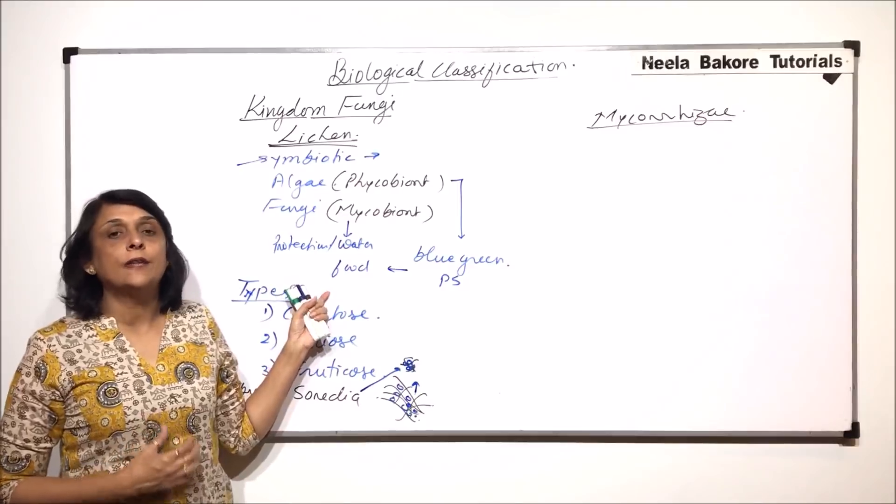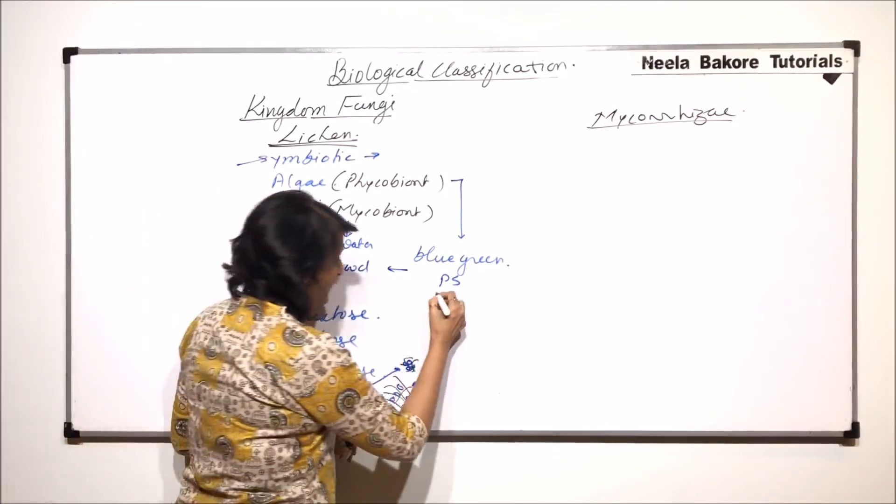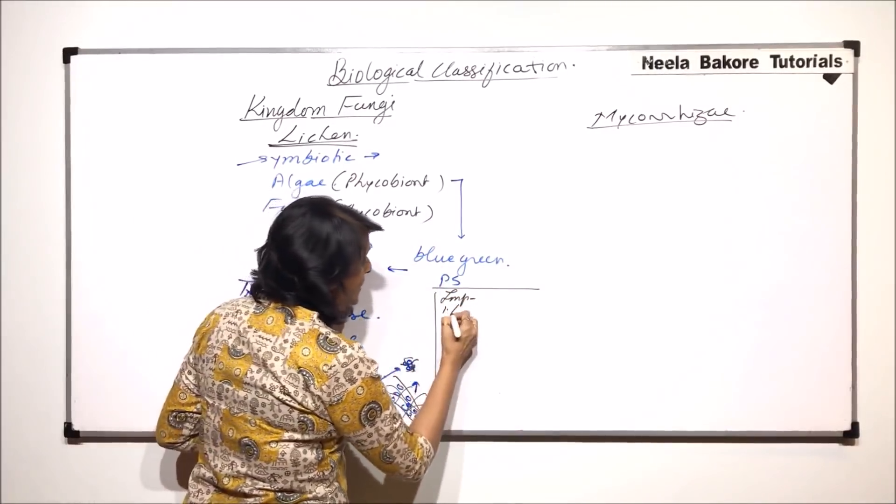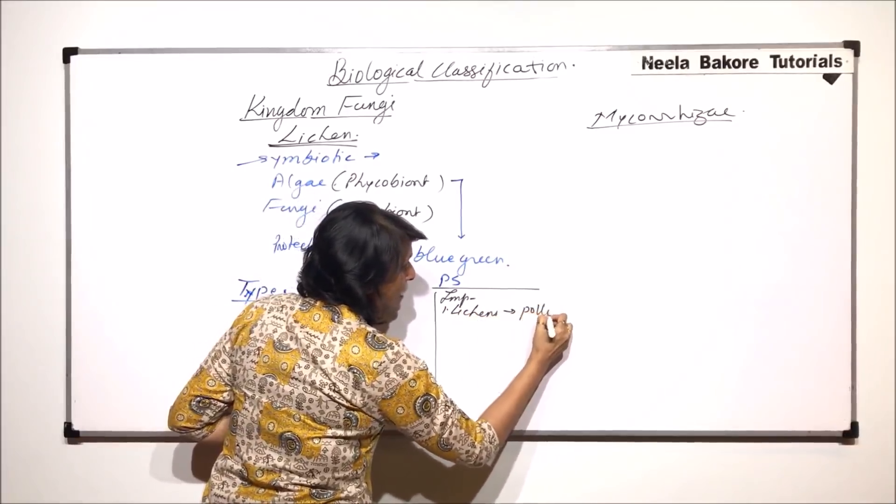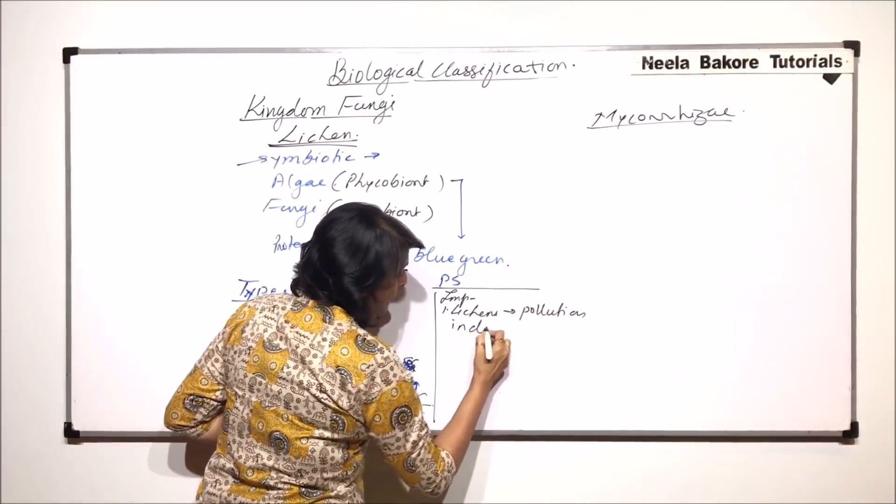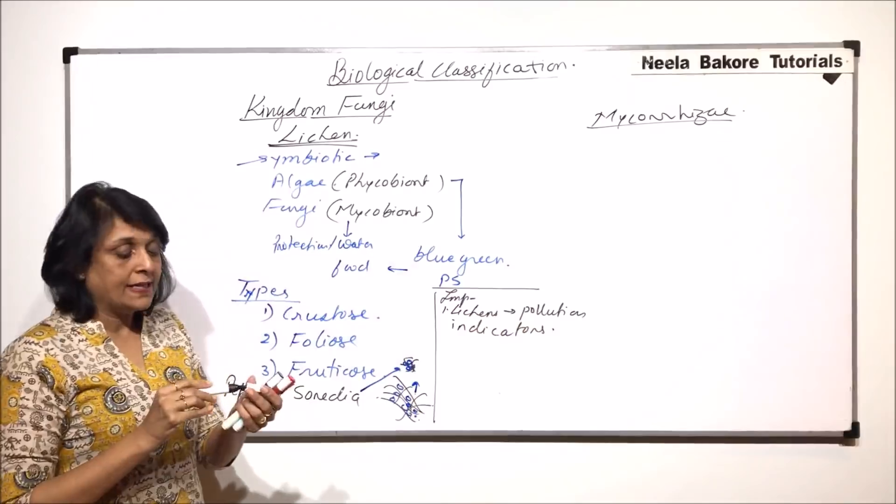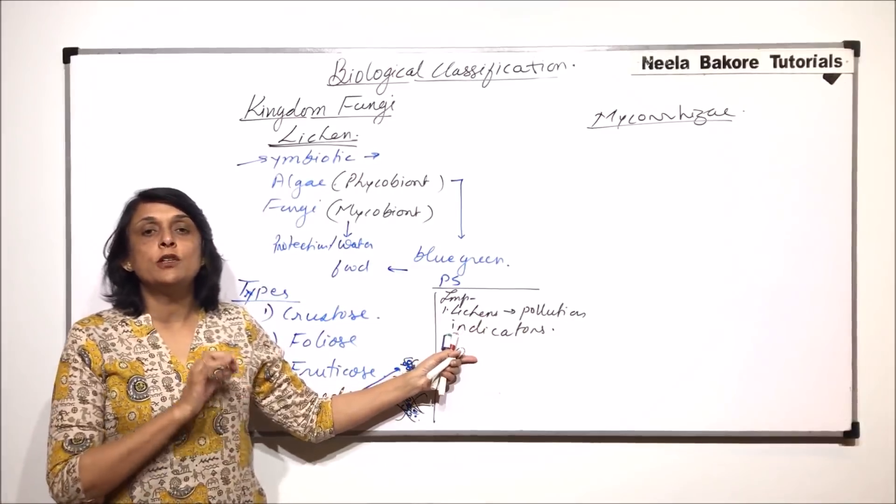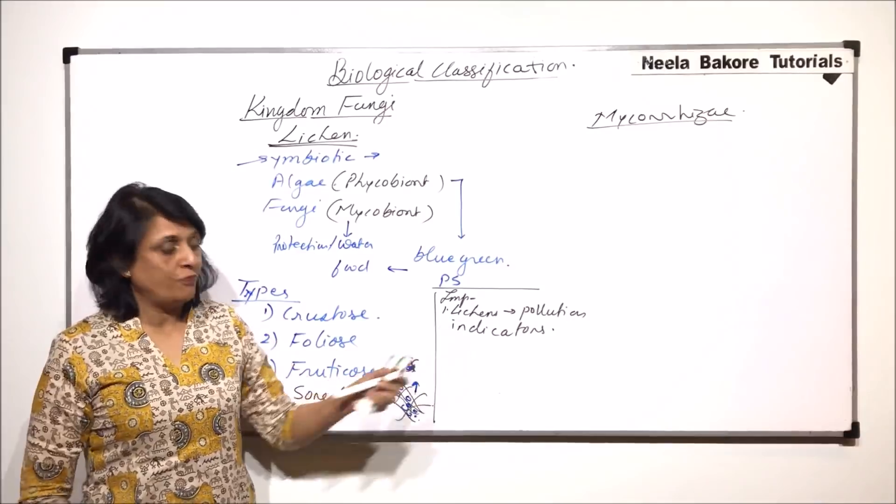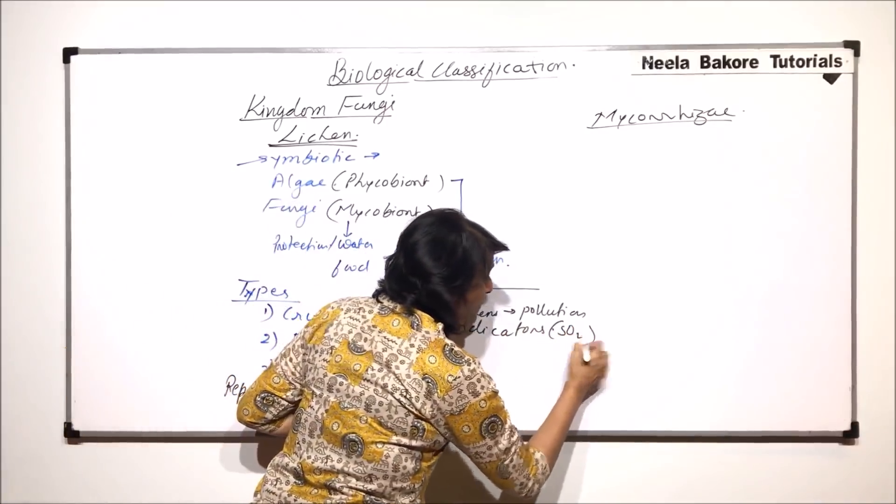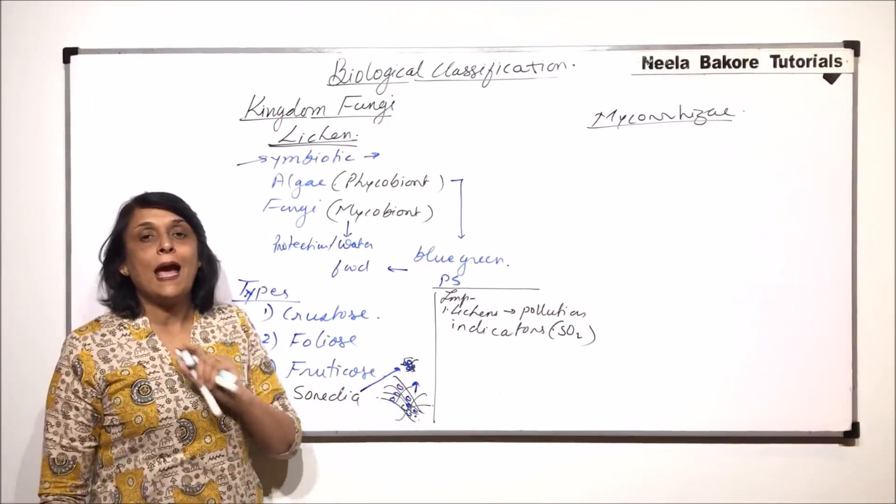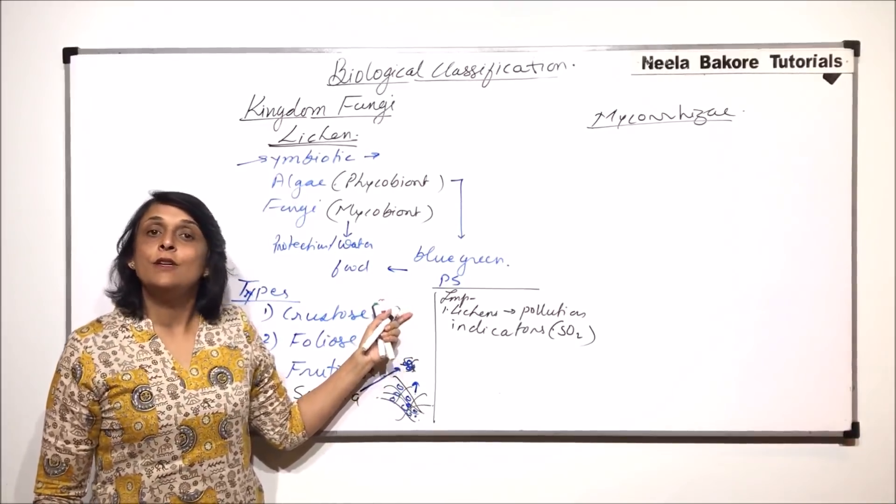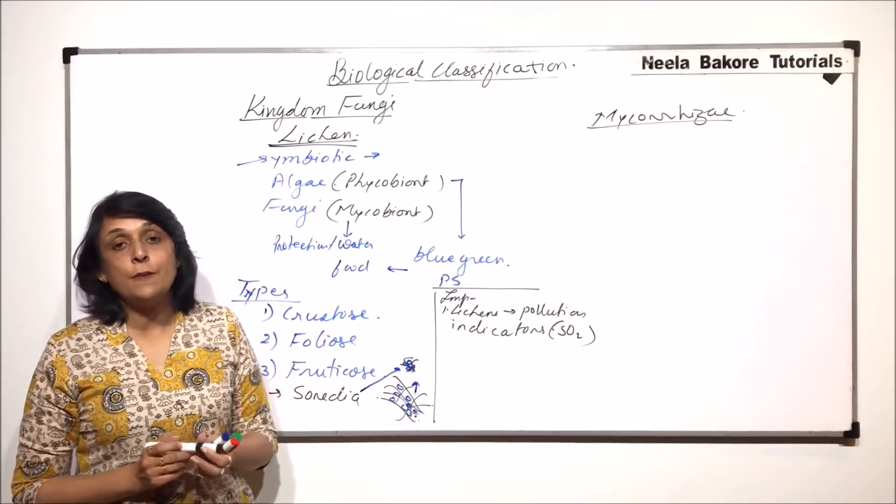Now let us talk about some important things about lichens. Number one, lichens are used as pollution indicators. If there is an area where we find very good growth of lichens, that means that area is absolutely pollution-free. If there is any kind of pollution, especially sulfur dioxide, there would be absolutely no lichen growth. As pollution increases, the lichens start to disappear.